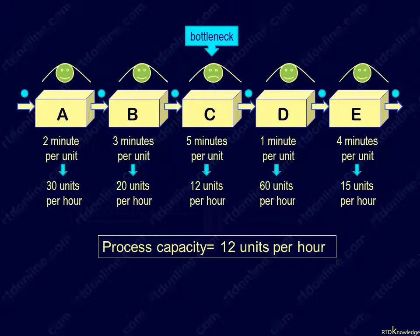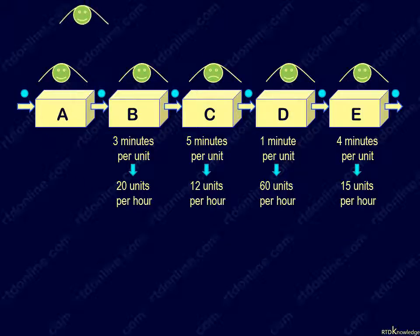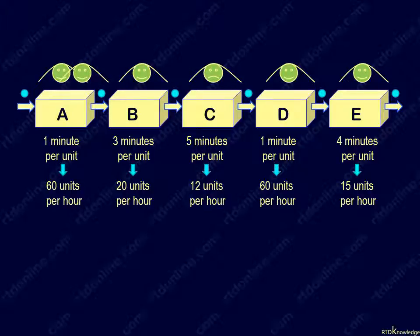Let's examine again our five-man process with an hourly capacity of 12 units. Suppose we add another operator to station A, thereby reducing its cycle time to 1 minute and doubling its capacity to 60.